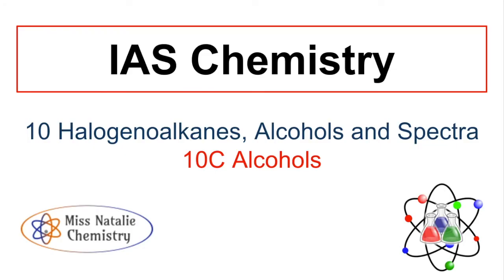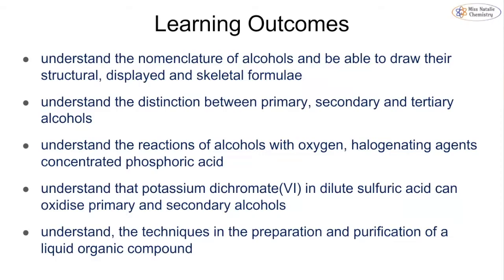In this video we're going to be looking at topic 10c of the organic chemistry for AS. We are looking at alcohols, which is part of the halogenoalkanes, alcohols and spectra topic. The learning outcomes we're going to be covering are the nomenclature and how to draw alcohols, being able to classify them as primary, secondary, tertiary, looking at specific reactions of alcohols including how to halogenate them and how to oxidize them, and looking at the techniques of how to prepare or purify a liquid organic compound.